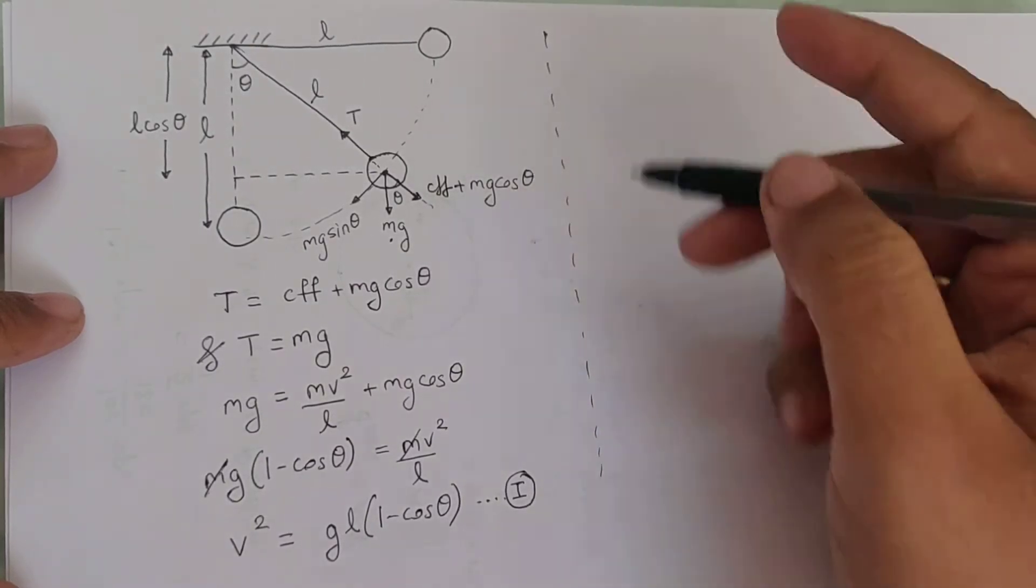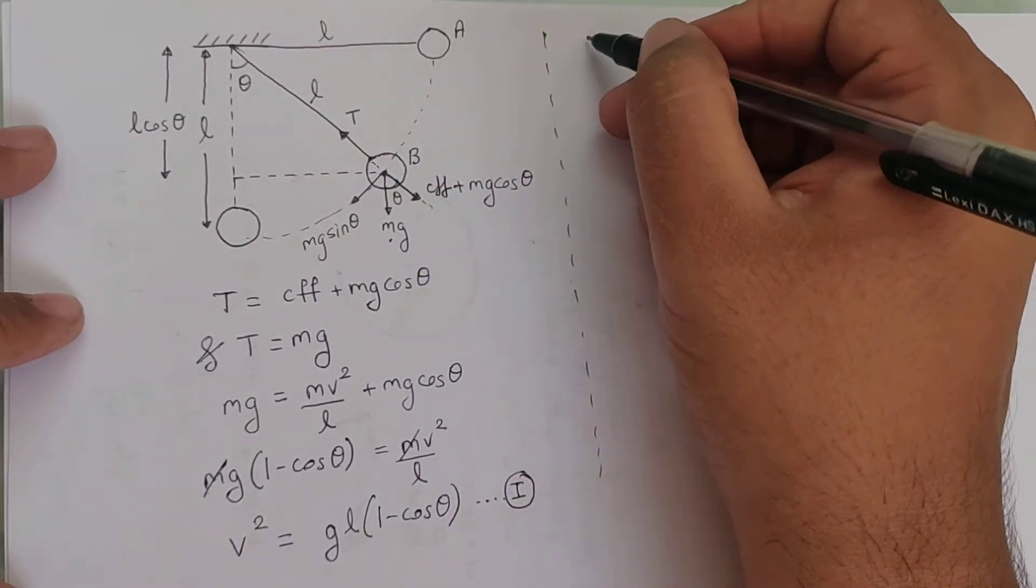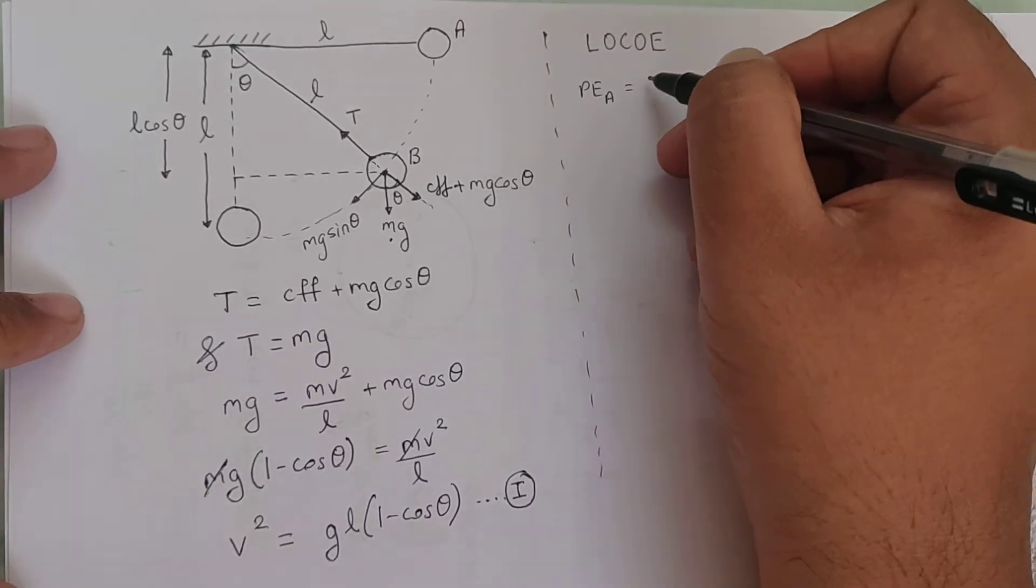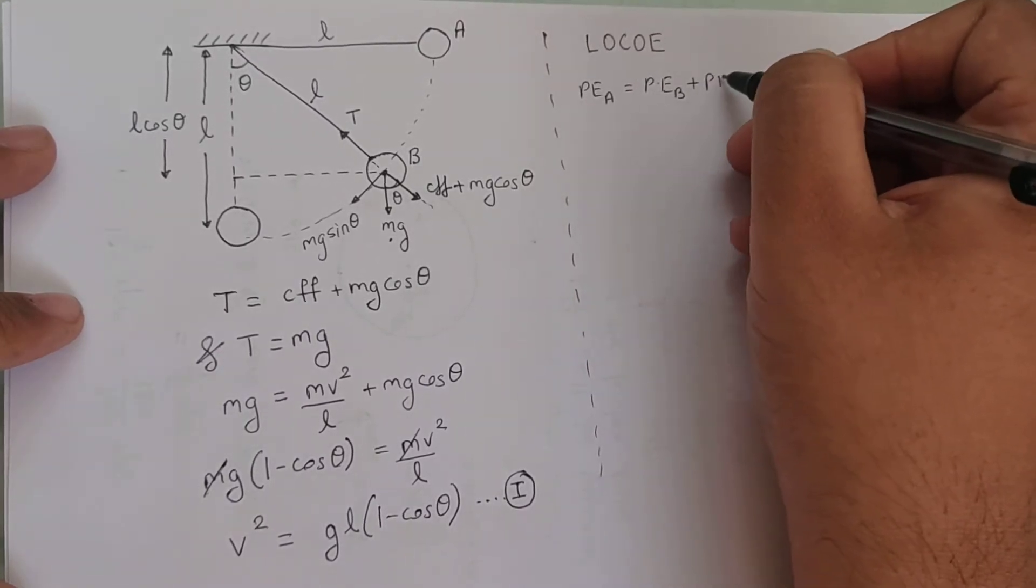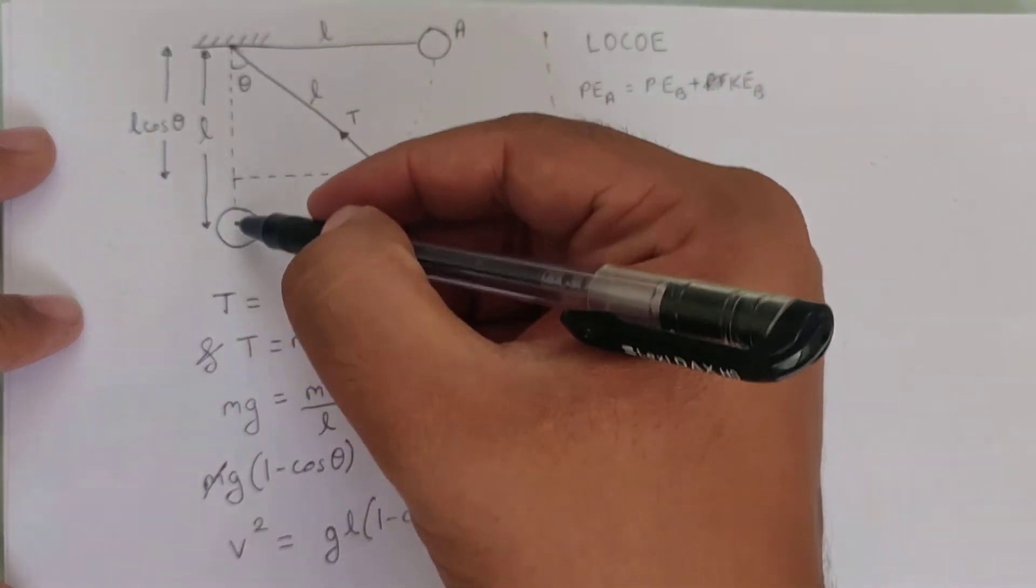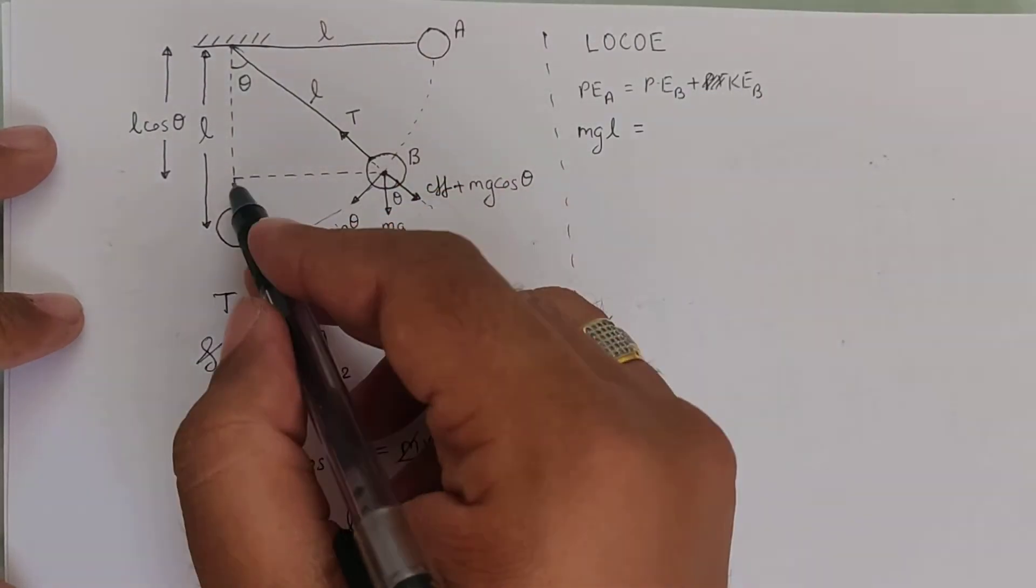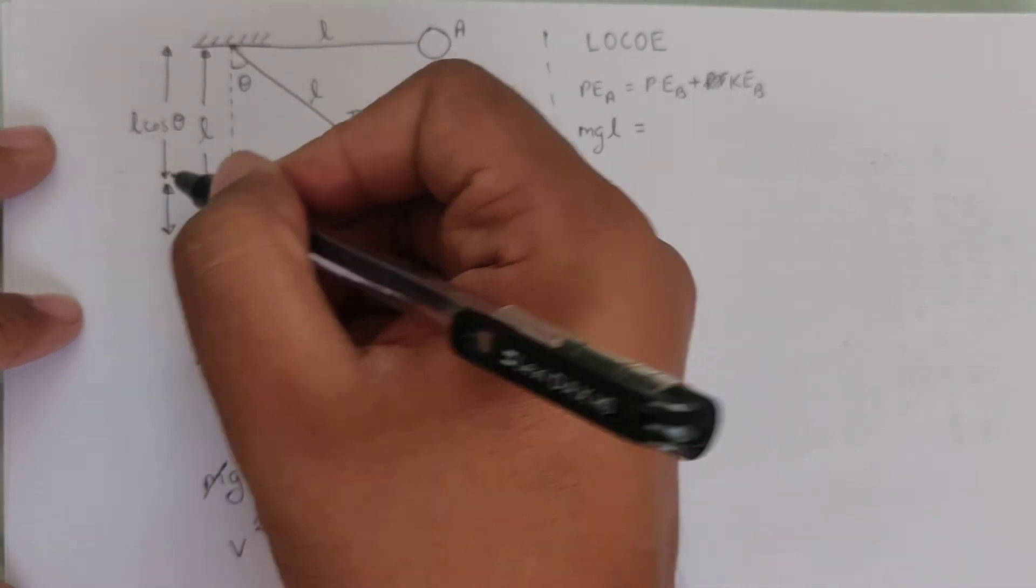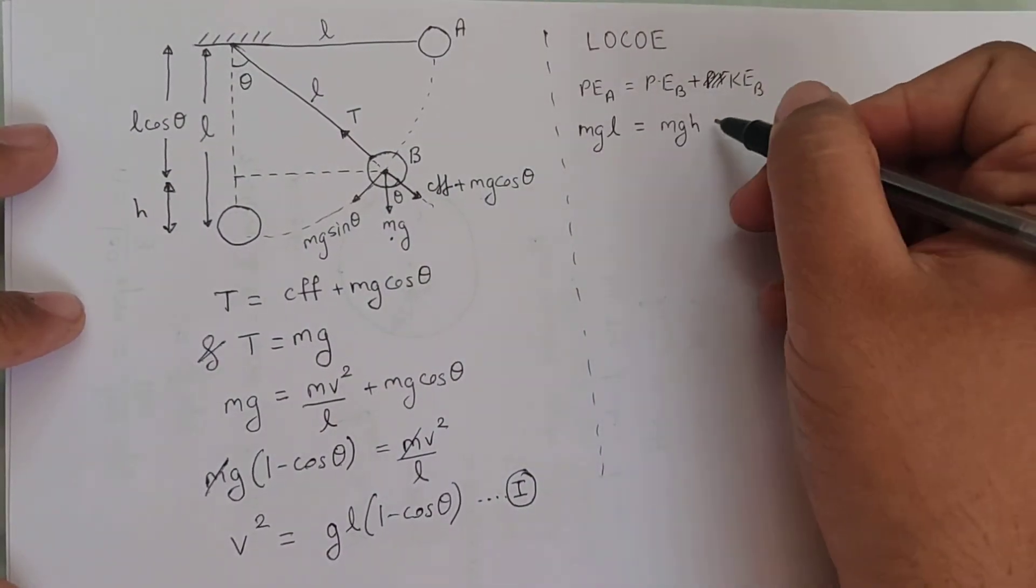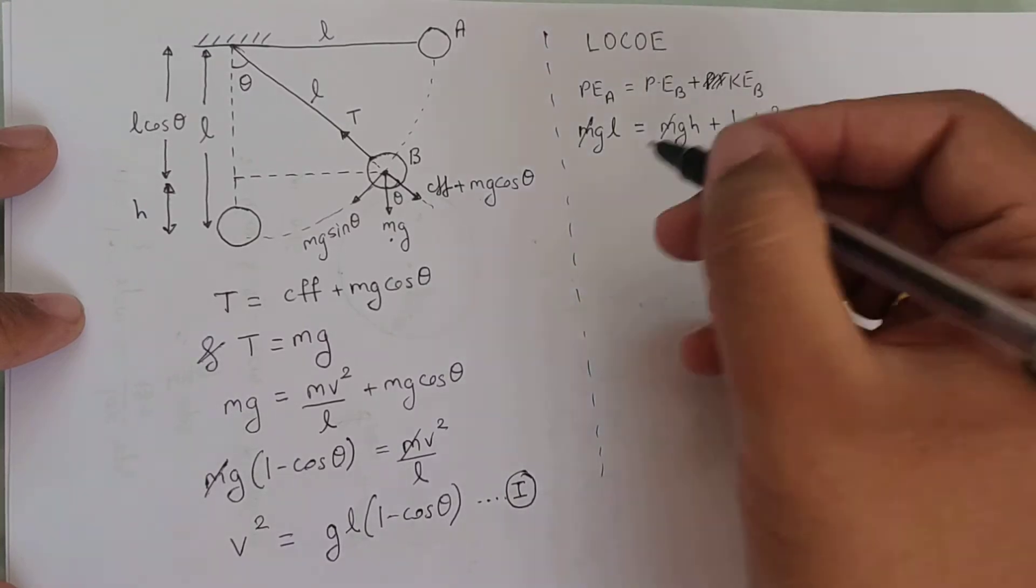Now if I apply law of conservation of energy, I can say the total energy at this point A and the total energy at this point B must be same. Using law of conservation of energy, the potential energy at A is potential energy at B plus kinetic energy at B. At A, the potential energy is MgH where H is height L itself, so MgL. At B the height is L minus L cos theta, so I can say MgH as the potential energy and the kinetic energy as half Mv².